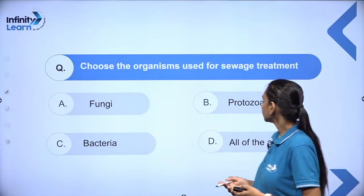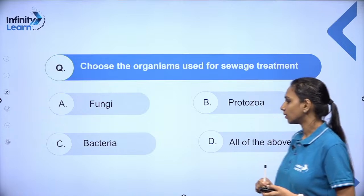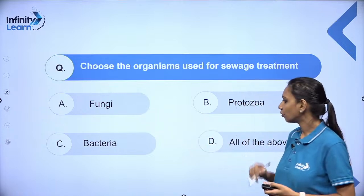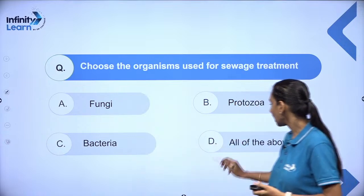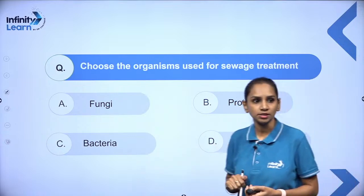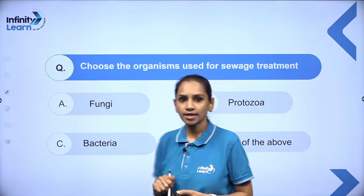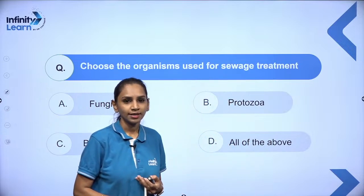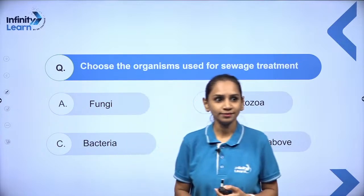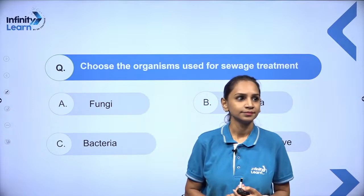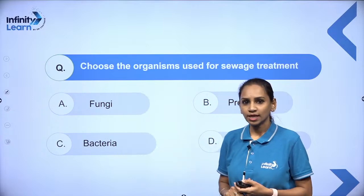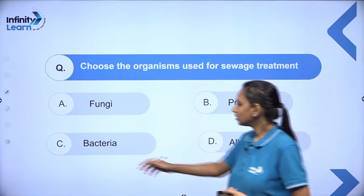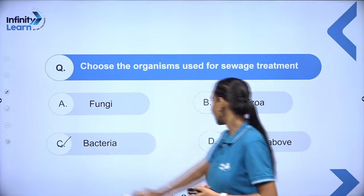Choose the organisms used for sewage treatment. Option A: fungi. Option B: protozoa. Option C: bacteria. Option D: all of these. The correct answer is generally bacteria.